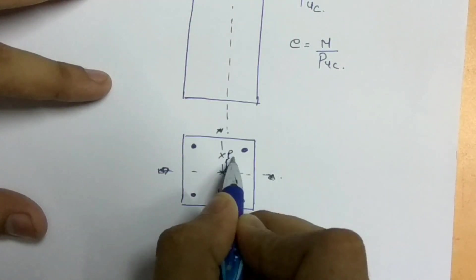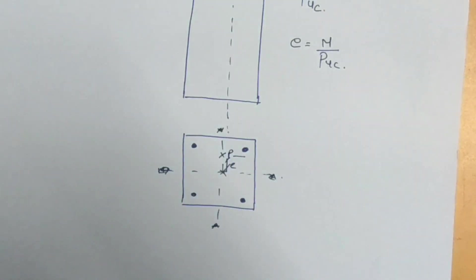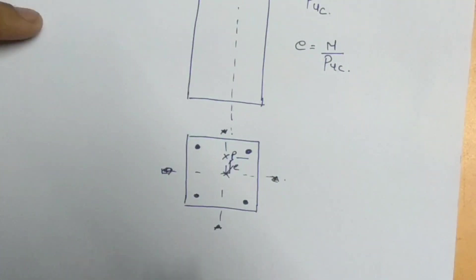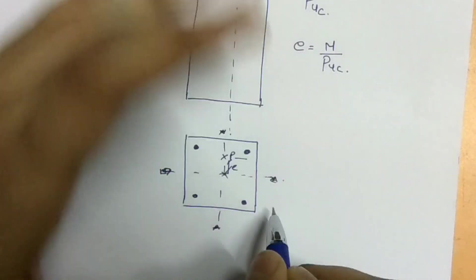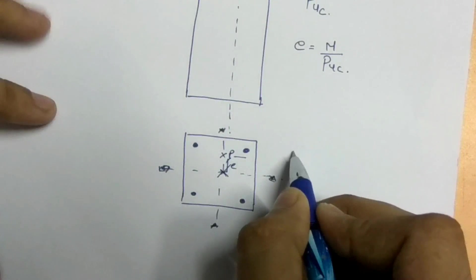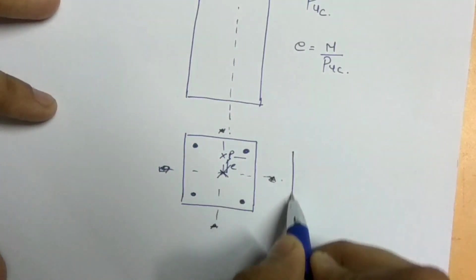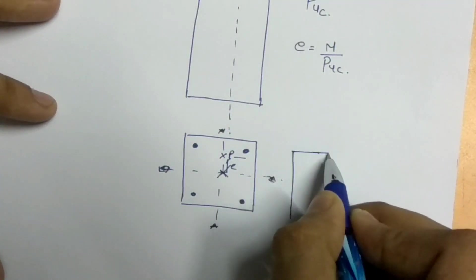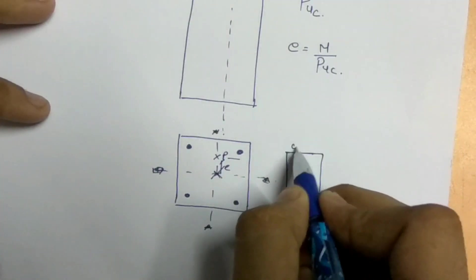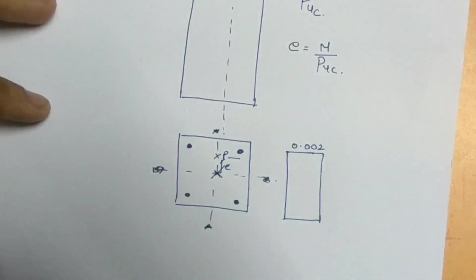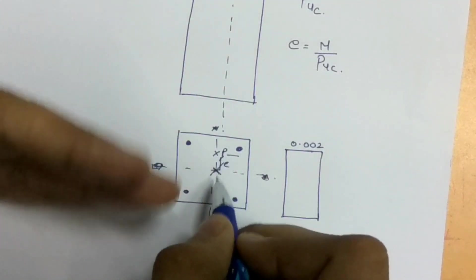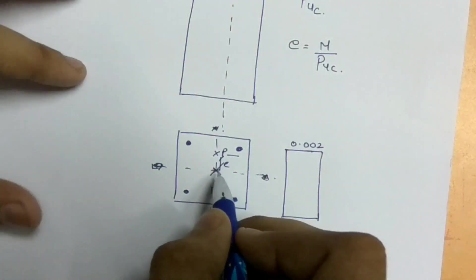Just like this — when eccentricity is added, the neutral axis depth changes. I assume this is the actual column, so this is the strain diagram. The maximum value in the stress block is 0.002. But if I add eccentricity, then what will happen to the strain distribution will change.